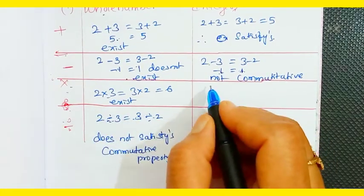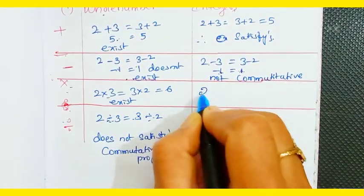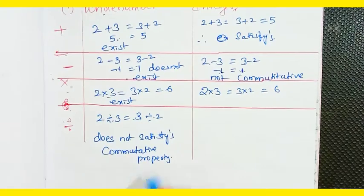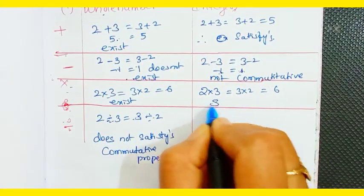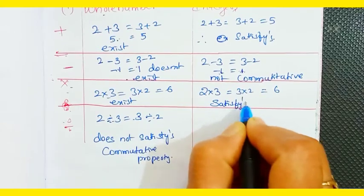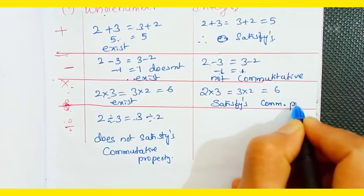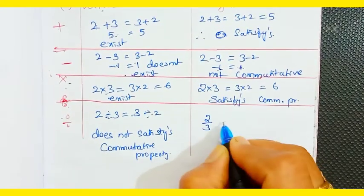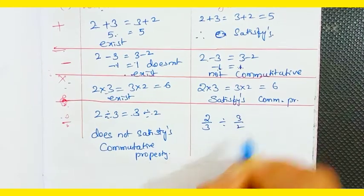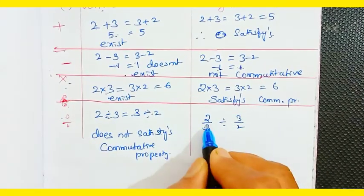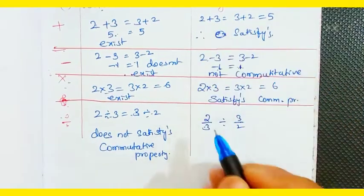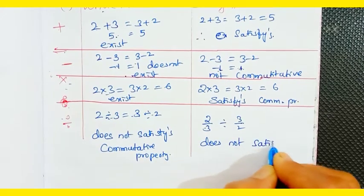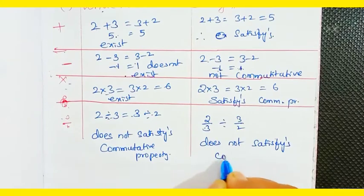For integers under multiplication: 2 × 3 = 3 × 2, both give 6 — it satisfies the commutative property. For division: 2/3 and 3/2 are not integers, so the commutative property does not satisfy for integers under division.